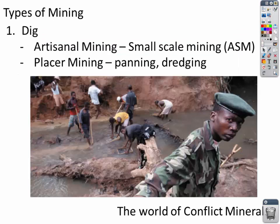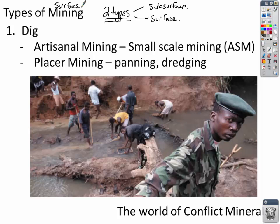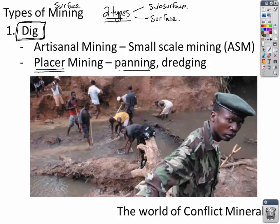Let's start with the types of mining. The first one is to literally dig. Artisanal mining or small scale mining is where we're going to start. Another type of surface mining that's more primitive is called placer mining, where you can picture people panning for gold or dredging in a stream bed or an alluvial fan deposit — basically just gravel and soil. To literally dig is a very primitive and energy intensive process.